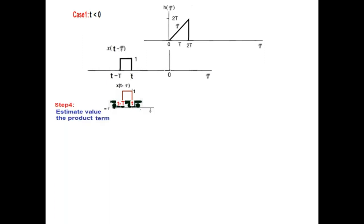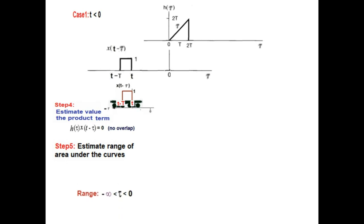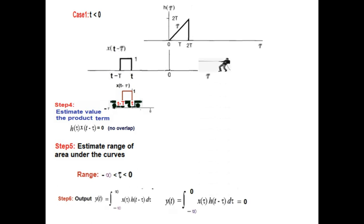For t less than 0, there is no overlap, so the product will be 0. The estimated range is minus infinity to 0, and hence the output from the convolution equation will be 0.